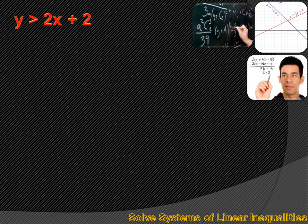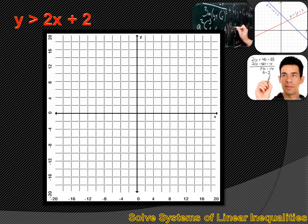If I've got the inequality y is greater than 2x plus 2, and I want to graph it, first I need a sheet of graph paper, and then I want to change that inequality into an equation: y equals 2x plus 2. Now I want to graph that line. It's in slope-intercept form, so I know that the y-intercept is positive 2 and the slope is positive 2. So I can graph that equation, and it'll look just like that.